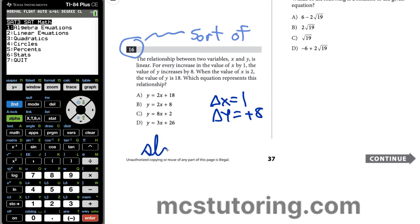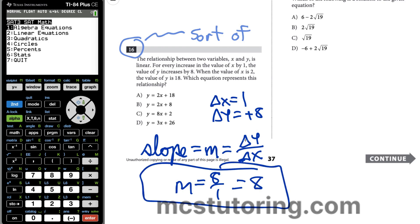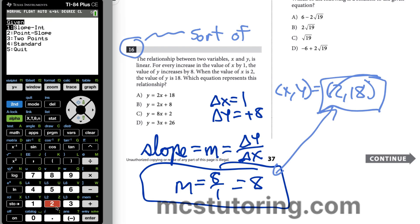For every increase in the value of X by 1, so when delta X equals 1, the value of Y increases by 8. That means delta Y equals plus 8. This delta symbol in math, and usually in science and even econ, means change. If you remember slope, sorry for using cursive for your youngsters out there, that's M. That's rate of change. That's basically delta Y over delta X. So that's going to be 8 over 1. The slope is 8. That's what's cool here. We have the slope. When the value of X is 2, Y is 18. It gives us more information we could use. So my X comma Y, like a coordinate pair, is 2 comma 18.